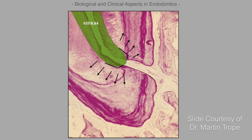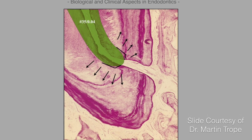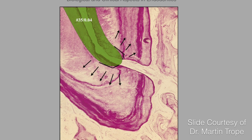Furthermore, histological studies have shown that the natural diameter of roots at the apex requires a biologically sound apical preparation size, and these biological sizes combined with effective irrigation improve our odds of clearing the biofilm and increase our chances of success in the long run.